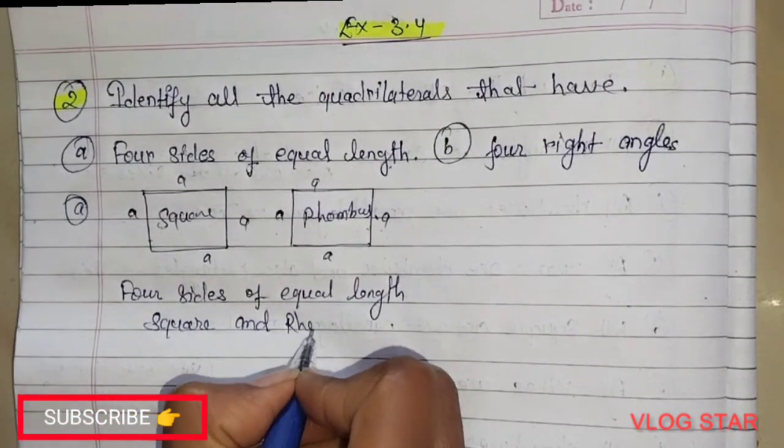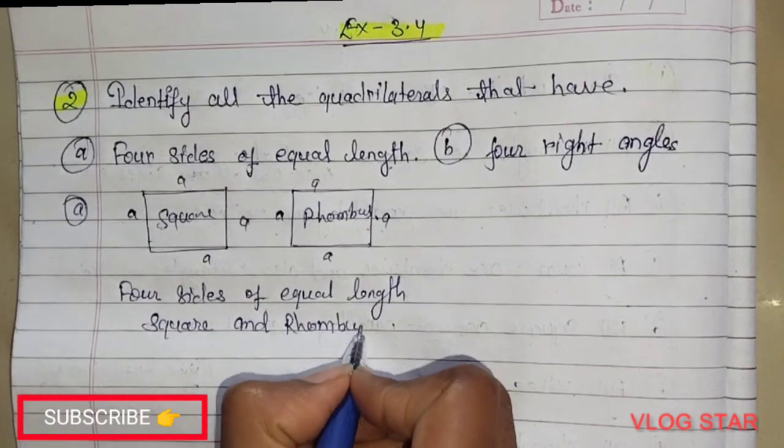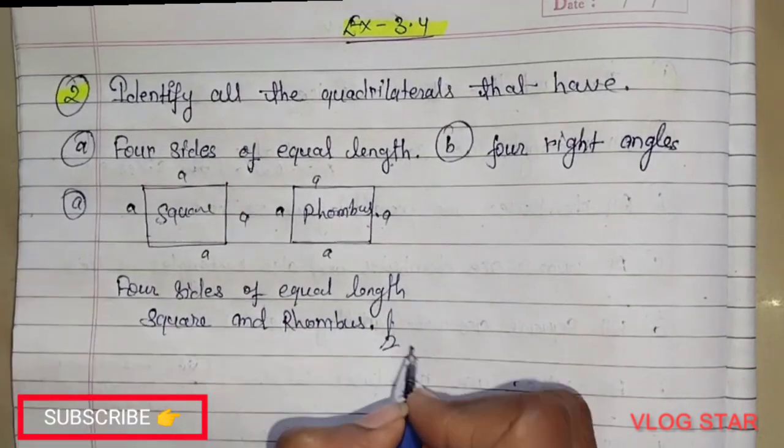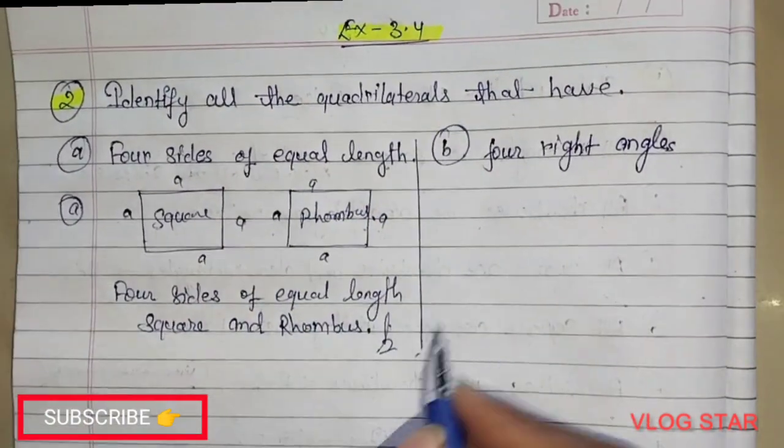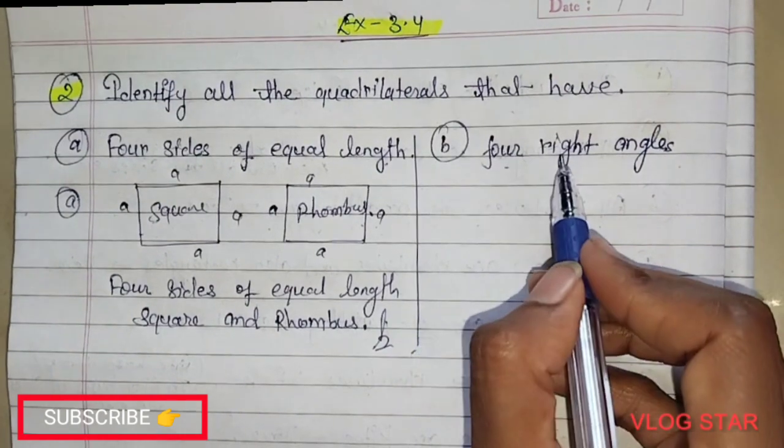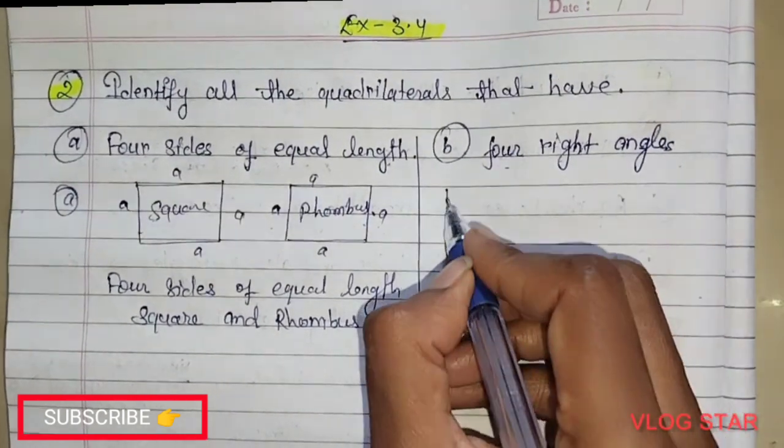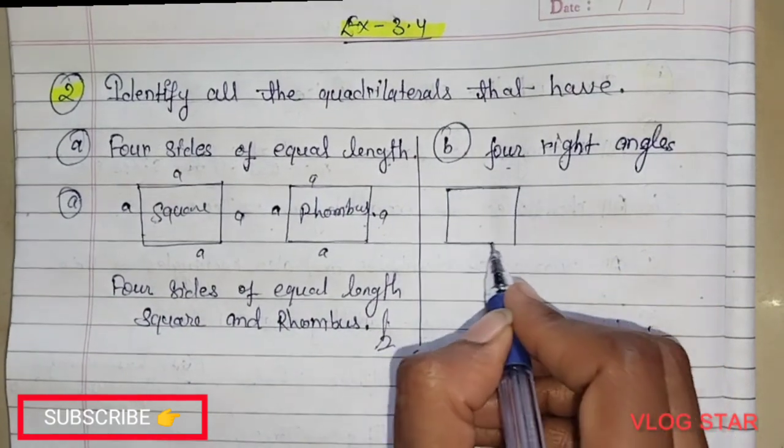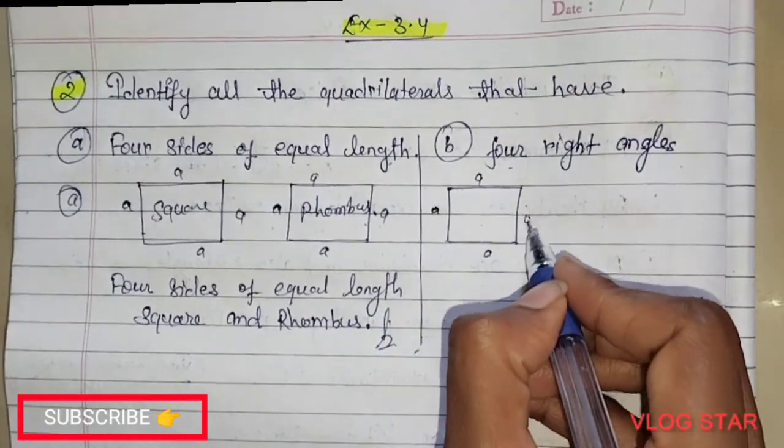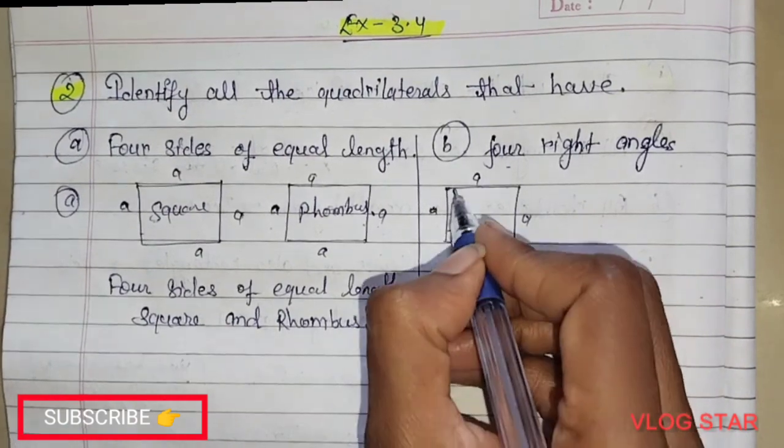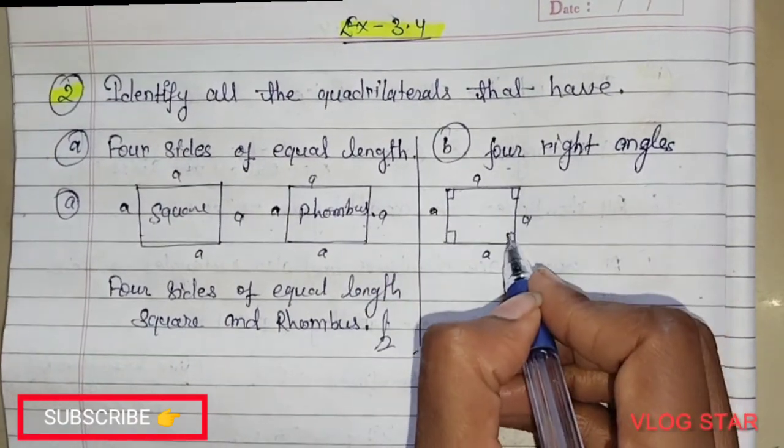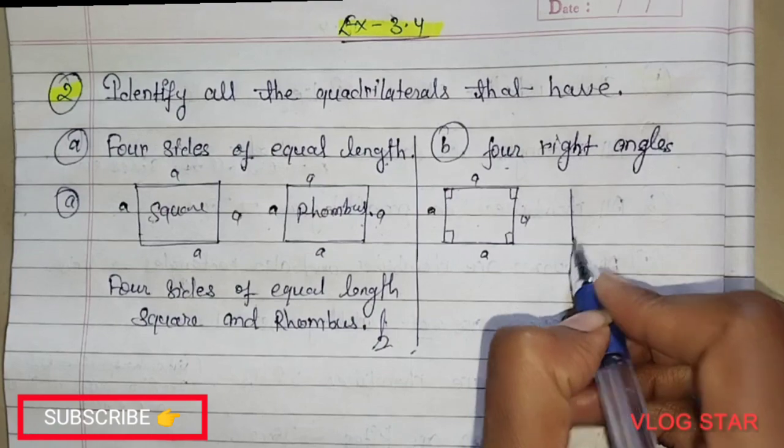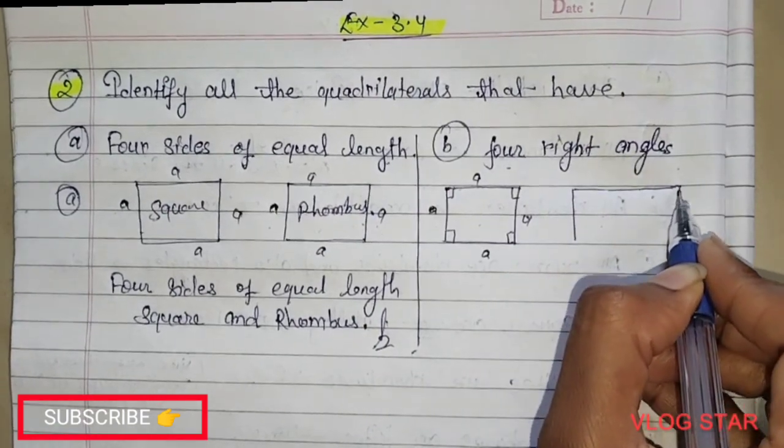rhombus. This is our answer. Next is part (b): four right angles. As we know, in a square all sides are equal and all the angles are 90 degrees, meaning right angles. And in a rectangle we also...